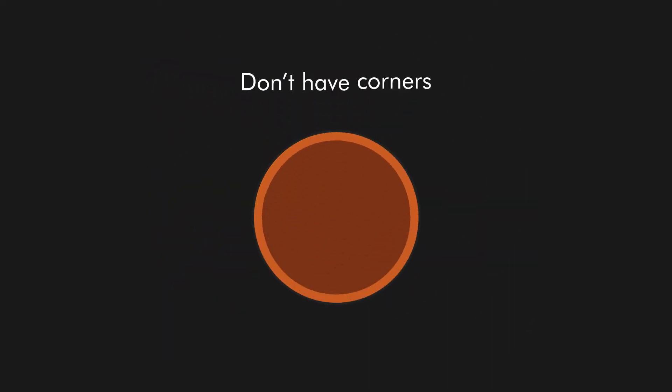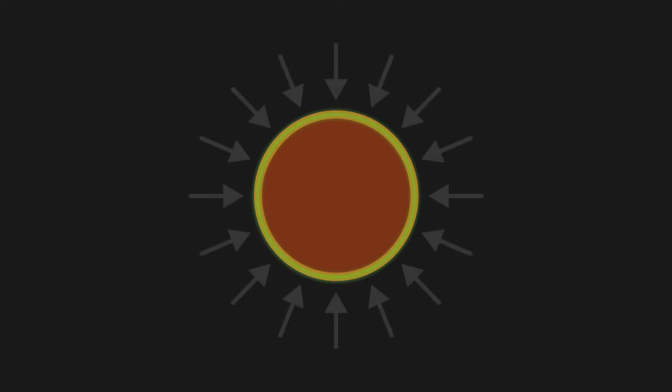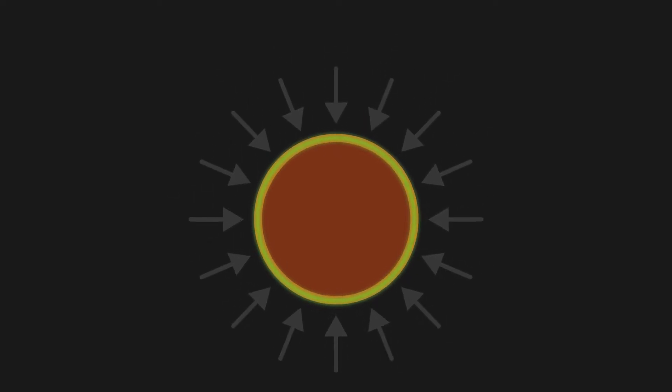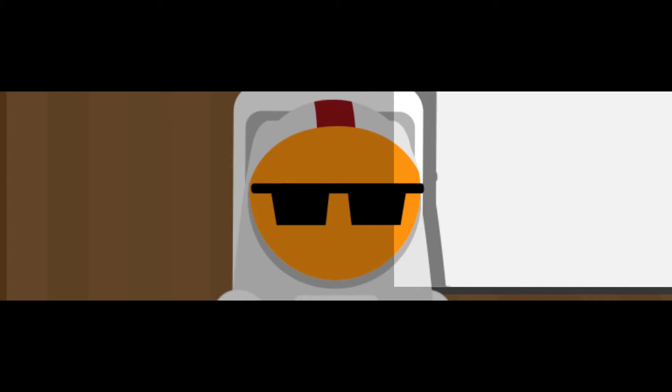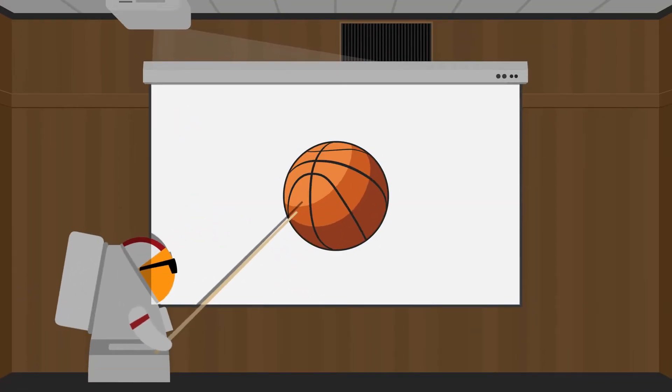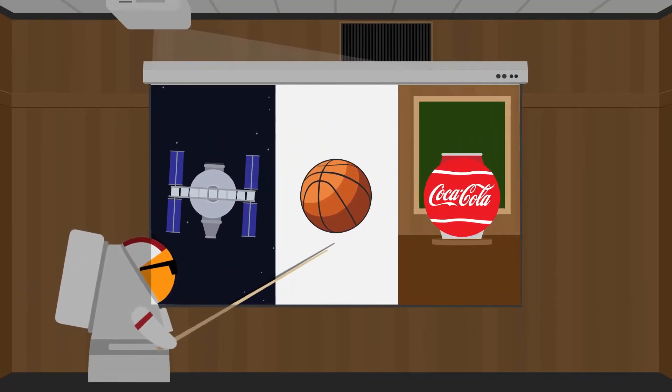And because balls don't have corners, they are also great at dealing with pressure. Because the pressure uniformly stresses the walls. Unlike a cube, whose edges are weak points needing to be strengthened to withstand high pressures. This makes balls the perfect shape for space modules, soda cans and submarines.